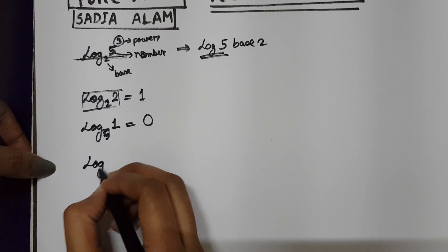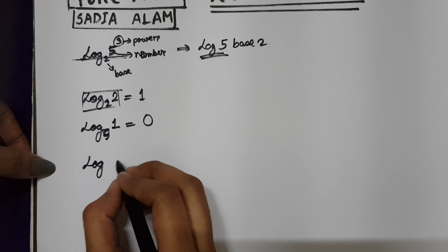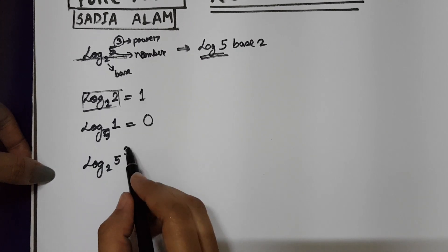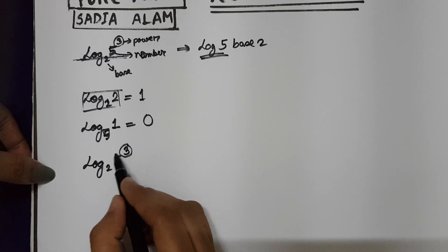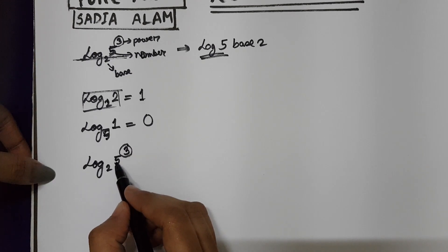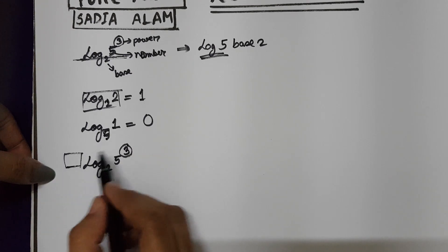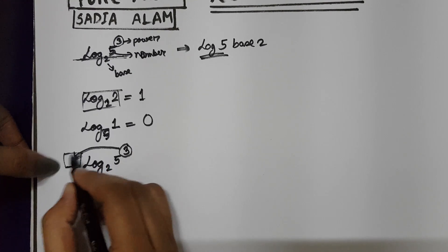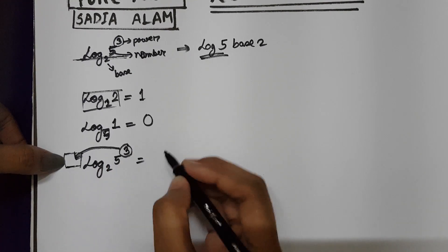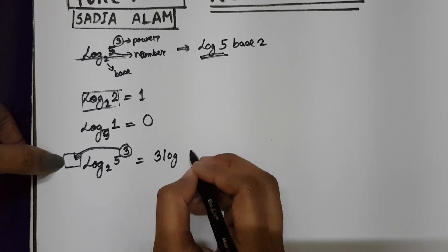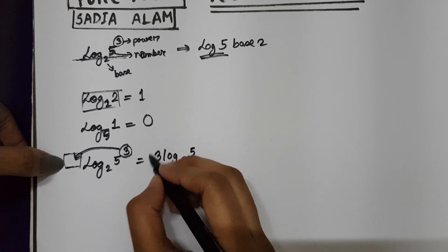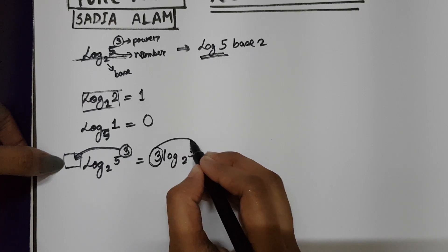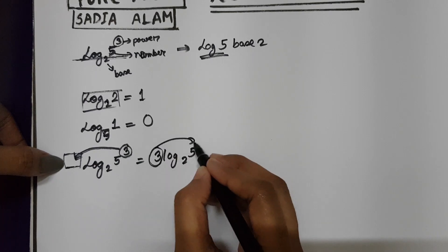Suppose you have log 5 base 2 with power 3. This 3 is the power of the main number 5. But you can shift this 3 and use it as the main coefficient. So we can write 3 log 5 base 2. This 3 can move its position — you can shift this term, and it can also go back to the power.